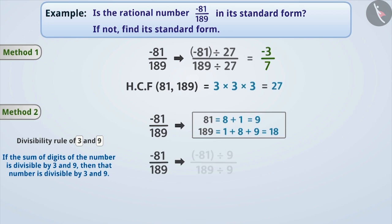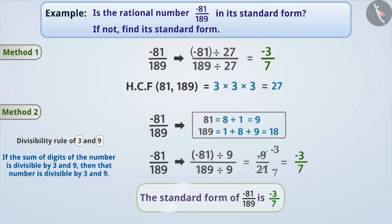We will divide both by 9. Again, we see that both the numerator and the denominator can be divided by 3, so we will again divide the numerator and denominator by 3. Now the numerator and denominator cannot be divided by any number other than 1, so minus 3 by 7 is the standard form of minus 81 by 189.